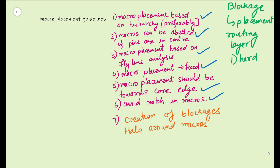One type is hard placement blockage, which blocks everyone — standard cells, macros, everything is blocked. Then there is something called soft blockage, which is a type of non-buffering blockage. And then there is a third type which is partial blockage. In partial blockage, everything is allowed but partially blocked. So if you have blocked 50% of the area, then the remaining 50% can still be utilized, and you can have your standard cells — which includes registers and buffers — placed there. All combo cells, registers, and buffers are allowed in the partial blockage.